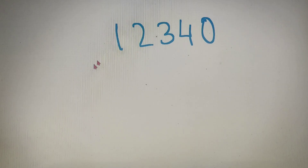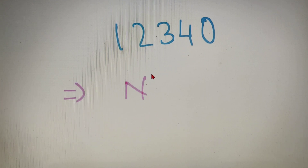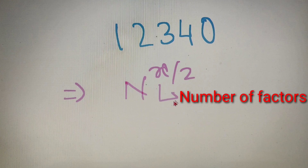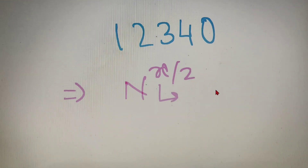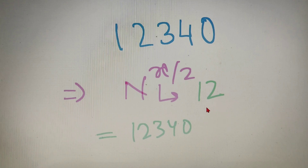Now the third and last part of our question is the product of factors. Finding out the product of factors is the simplest of all three. The formula is equal to n to the power (x divided by 2), where x is the number of factors of the number. We have already calculated the number of factors in the first part, which is equal to 12. So the product of factors is equal to 12340 to the power 6.